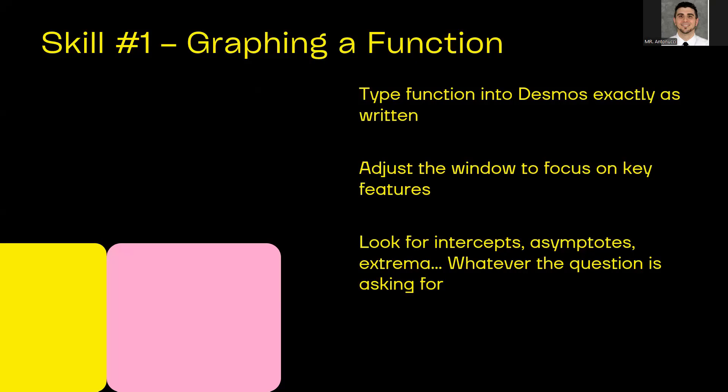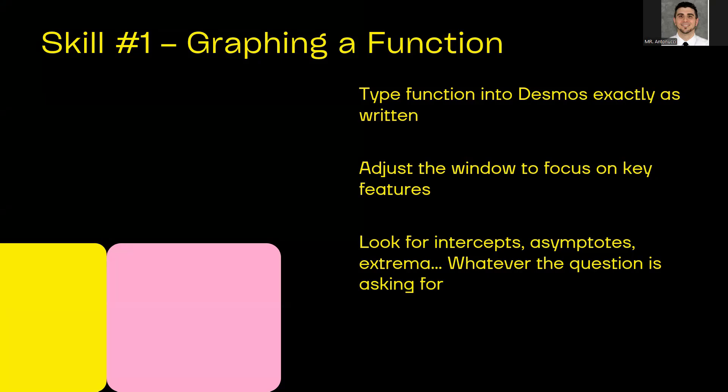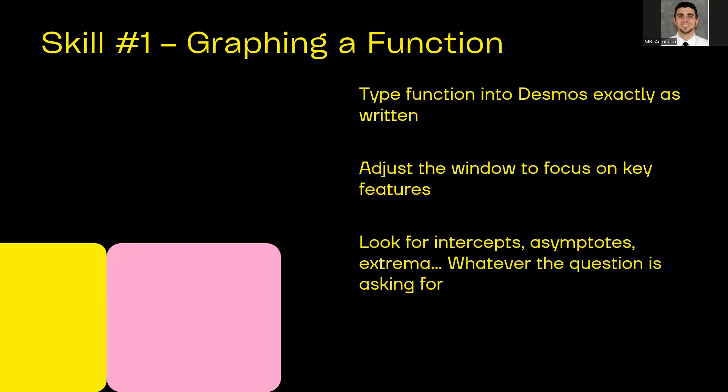First up is graphing a function basically in an arbitrary viewing window. So you need to figure out the viewing window for that graph. It sounds simple, right? But on the AP exam, they're not always going to tell you what window to use. You have to figure that out. So here's how to do it in Desmos. Type your function in exactly as written. Adjust the viewing window using the tool to focus on important parts of the graph. And then look for the key features, whether it's intercepts, asymptotes, extrema, change of sign, whatever the question is hinting at. So I'm going to run through an example with you.